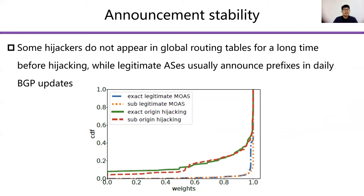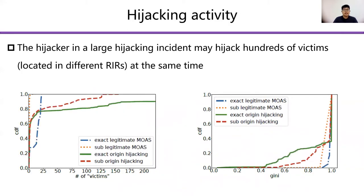We also note that some hijackers do not appear in global routing tables for a long time before hijacking, while legitimate ASes usually announce prefixes in daily BGP updates. As shown in this figure, legitimate ASes almost continuously announce prefixes, while the overall announcement activity of real hijackers is much lower. We found that a hijacker may attack hundreds of victims simultaneously, while a legitimate AS is generally present in limited MOAS conflicts. We also calculate the Gini coefficient of RIR distribution of victims, and observe that origin hijacking shows a higher Gini coefficient than legitimate MOAS.